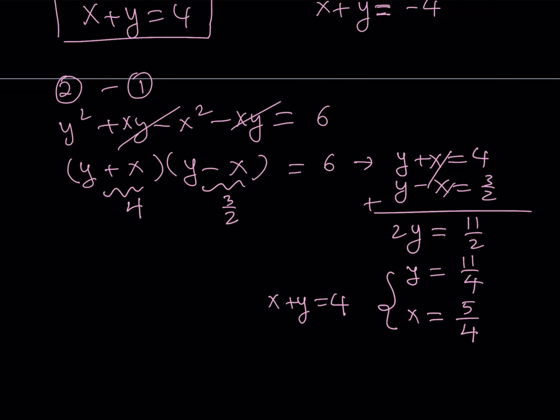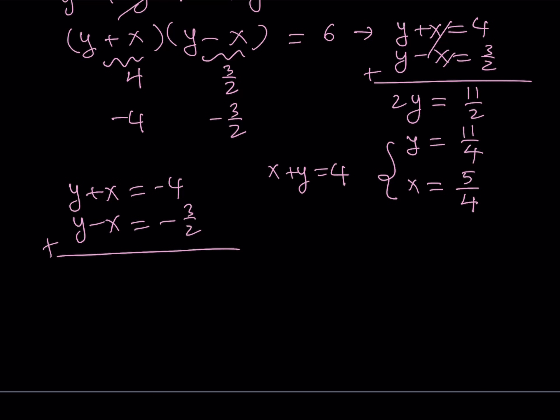But this is the case where y + x = 4. What happens if y + x = -4? Then we get -3/2 for y - x. If y + x = -4 and y - x = -3/2, and then we add these two equations, get rid of x, we get 2y. We're going to get the opposite of what we got before, which means y is going to be -11/4, and x is going to be -5/4. The solution will still work.